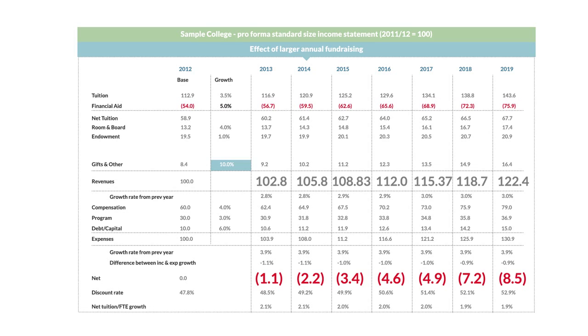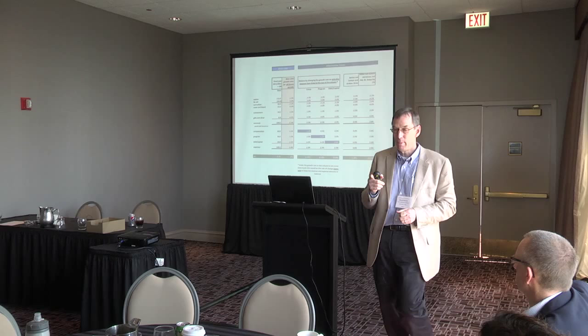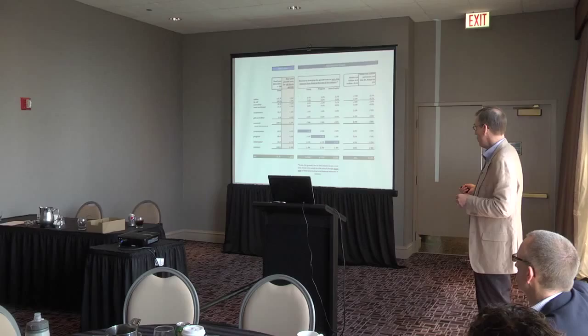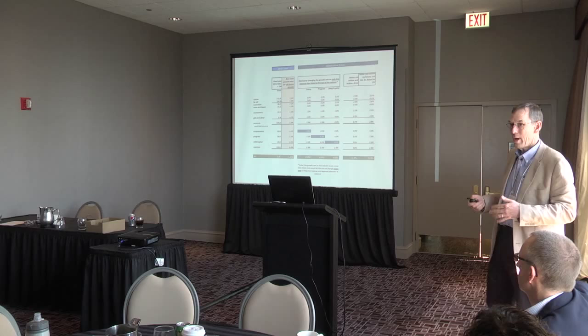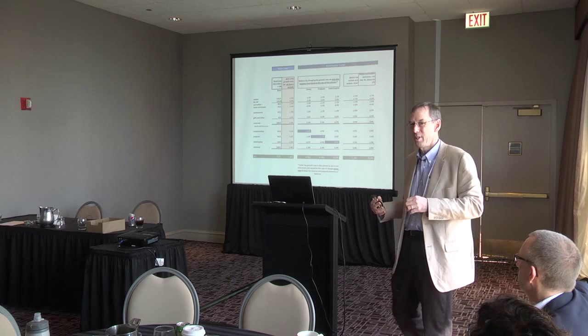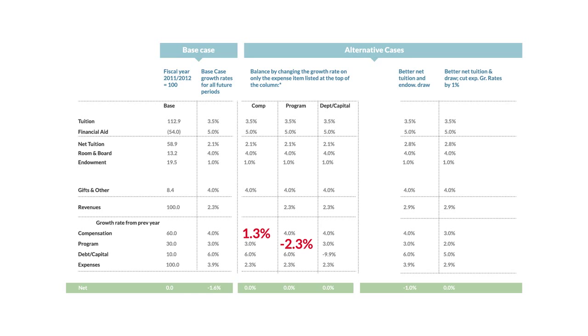What if we decided expenses would be the way to solve this? I changed the growth rate in each expense category to balance the budget, but only one at a time. If compensation grows at 1.3% per year rather than 4%, the whole thing will balance. If instead we go after all the non-people, non-capital budgets and manage those expense lines, those budgets would have to be cut by 2.3% every single year. And if we go after debt and capital — the building isn't really falling down — that category would have to be cut by 10% a year every single year. It's unlikely you would balance any budget by isolating one category and saying everybody else is protected.